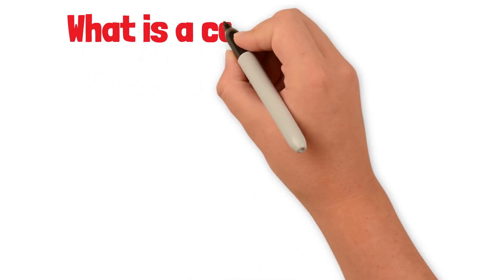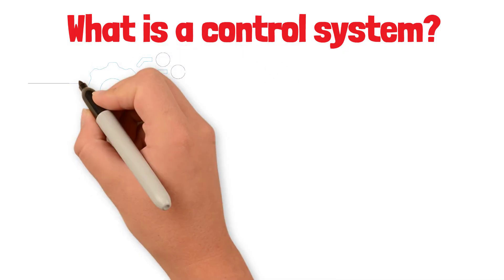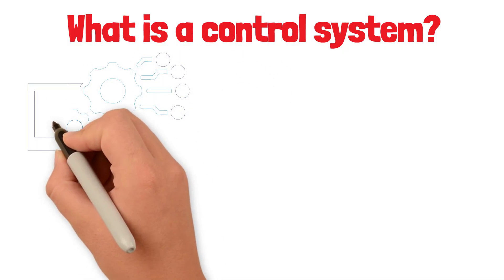Okay, so what is a control system? A control system is a set of devices or rules that manages, commands, or regulates how something behaves.